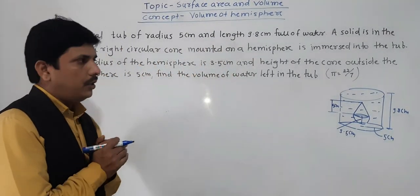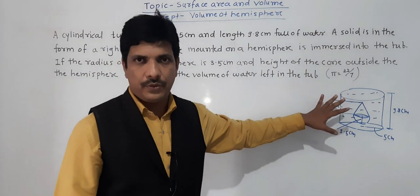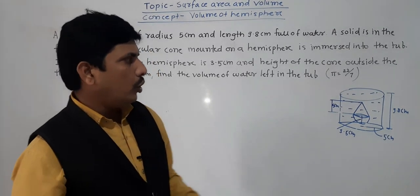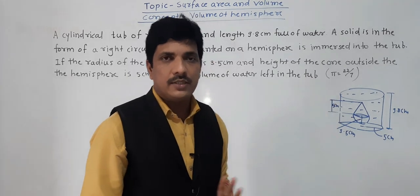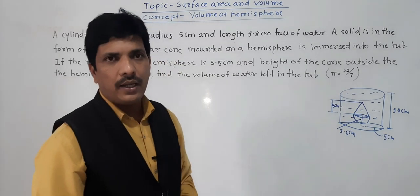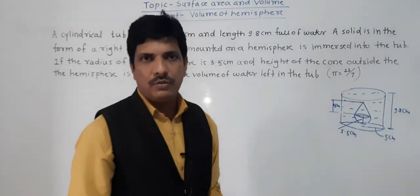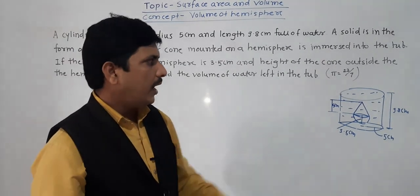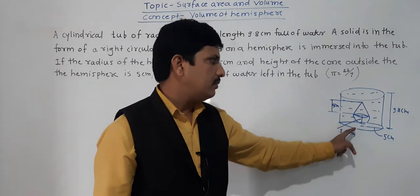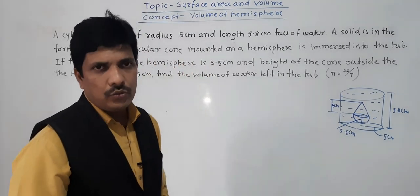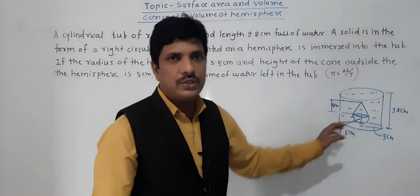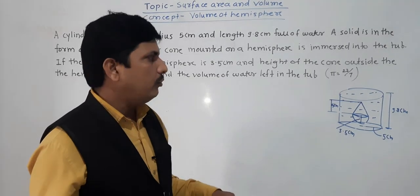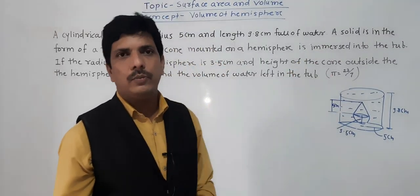To solve this: first find volume of the cylinder (which equals the volume of water). Then find the volume of the solid (cone + hemisphere). Finally subtract the volume of the solid from the volume of the cylinder to get the volume of water left. All values are available.